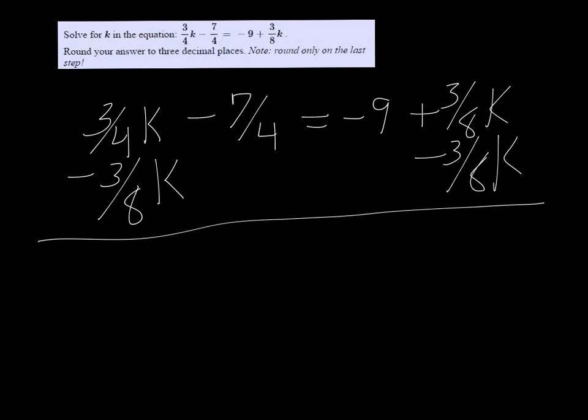So in the calculator, in the scientific calculator like a TI-30, we can do 3 fraction 4 minus 3 fraction 8, and we get that it's 3/8k.